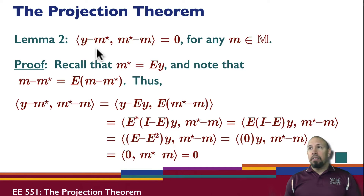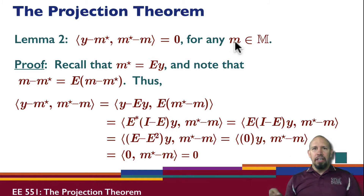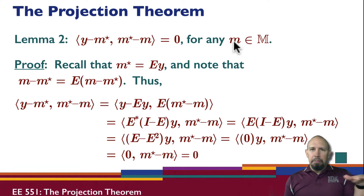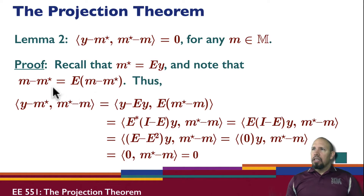Any M in the subspace. Recall that M star is equal to E times Y. Note that M minus M star: since M is in the subspace, then M is equal to E times M. Remember, the projector projects back onto itself, so anything in the subspace getting operated on by E is back to the same point. So M equals E times M, and M star equals E times Y. So M minus M star, which is in M, is also equal to E times (M minus M star).